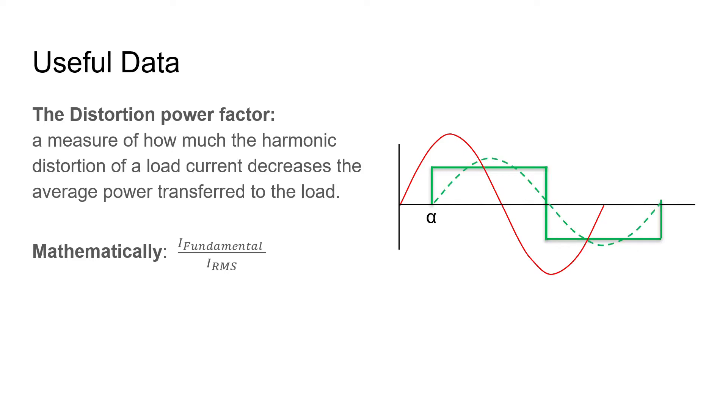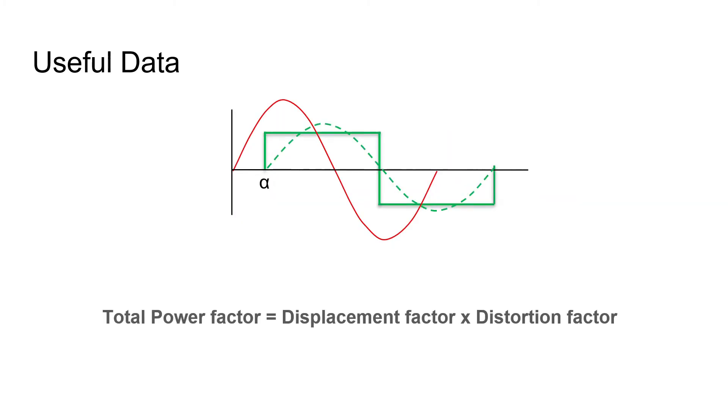Mathematically, it is the ratio of I_fundamental upon I_rms. Thus, the total power factor of the converter is equal to the multiplication of the displacement power factor and the distortion power factor.